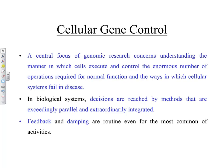A central focus of genomic research concerns understanding the manner in which cells execute and control the enormous number of operations required for normal function, and the ways cellular systems fail in disease. If an oncogene turns on, you could get uncontrolled cell proliferation leading to cancer. Or a tumor suppressor — like a brake on cell division — turning off would also be problematic.